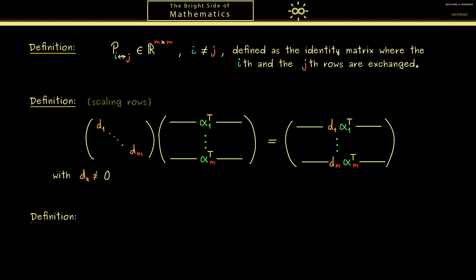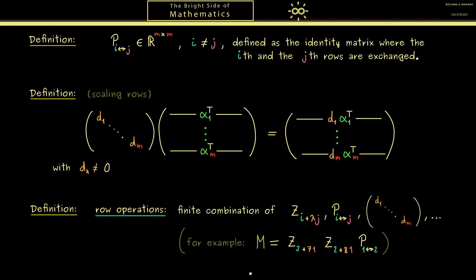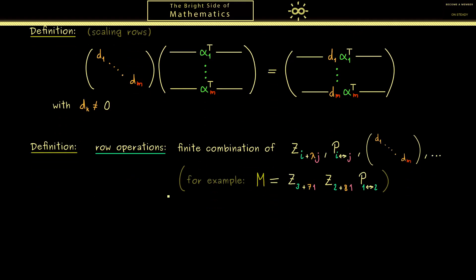We can write this as a definition: row operations means a finite combination of the matrices above. We multiply all these matrices from the left and we know we can also reverse this manipulation — we don't lose information. The idea in the end is that we don't have to define such a matrix M explicitly; we just do all the row operations knowing they don't change the result, only making it easier to see the solution set of the system.